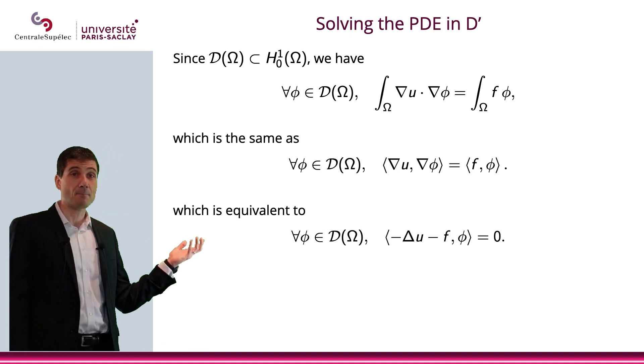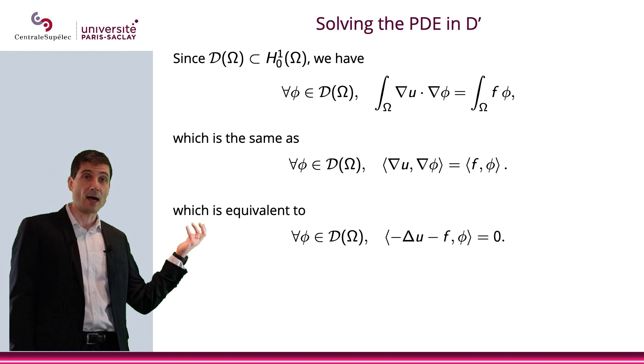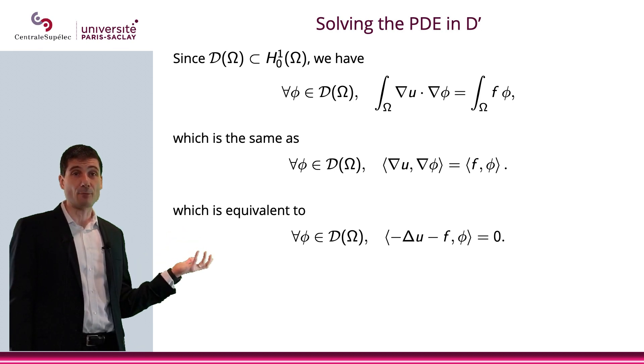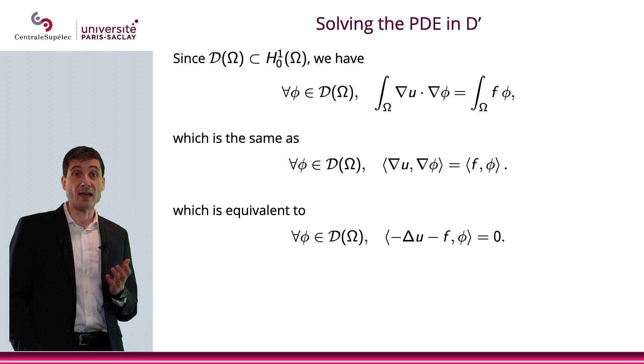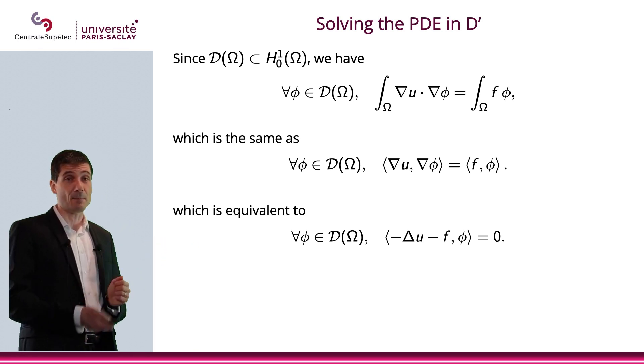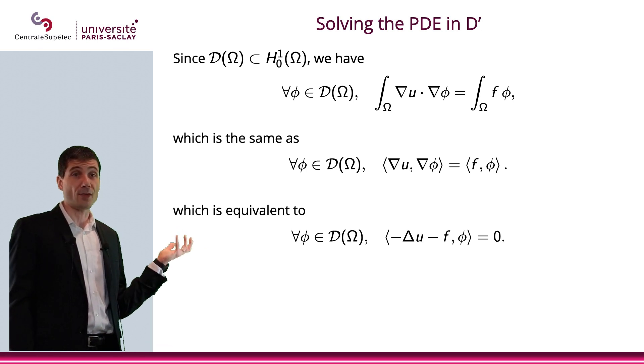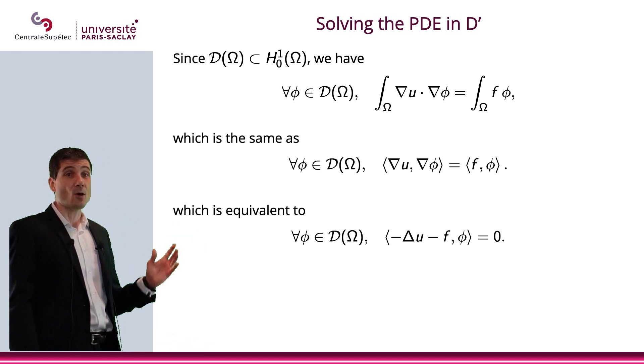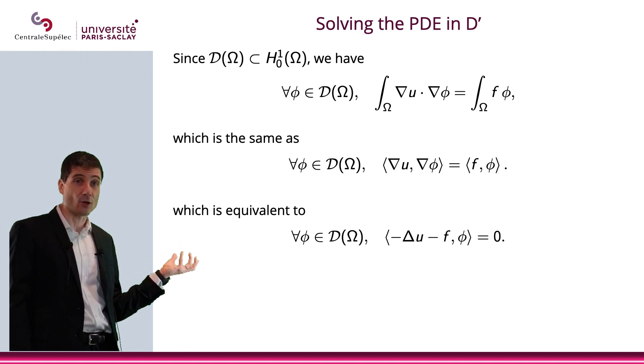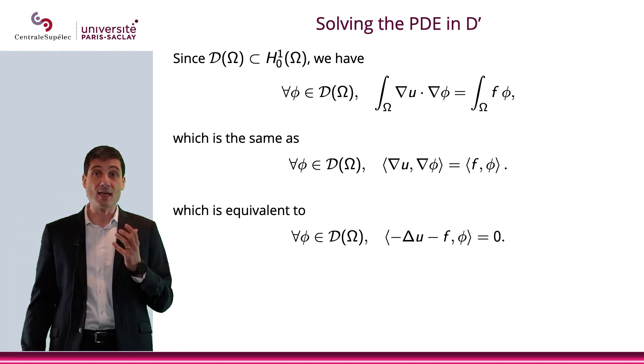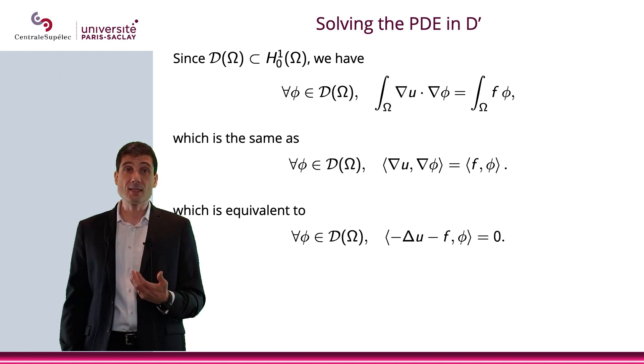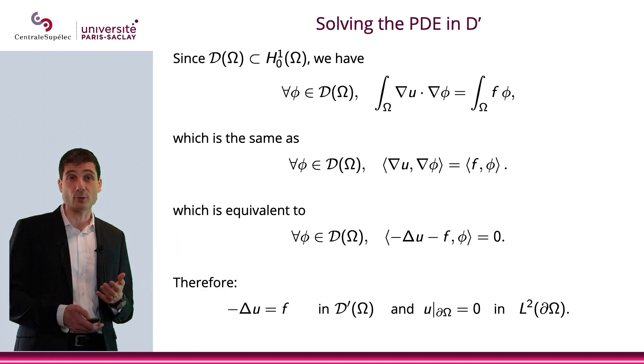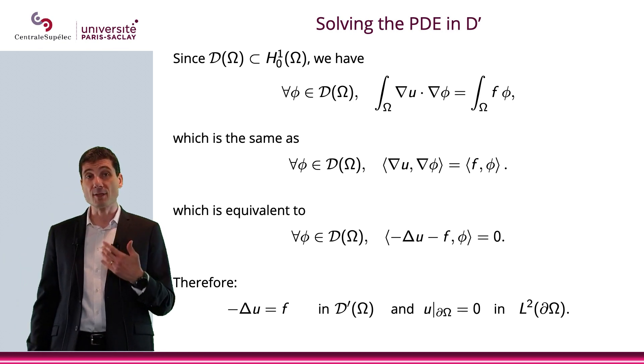For all test functions phi, I can write this, which means I can derive that del u del phi equals f phi for all phi. Then I can turn my del operator into a divergence. Divergence of del u is minus Laplace operator applied to u. That's minus f phi, since I move my right-hand side to the left. So what I end up with is minus Laplace u minus f phi equals 0 for all phi. What I have on the left of the bracket, minus Laplace u minus f, is a distribution.